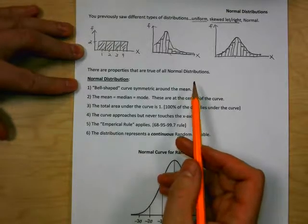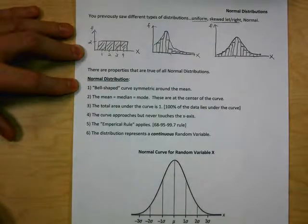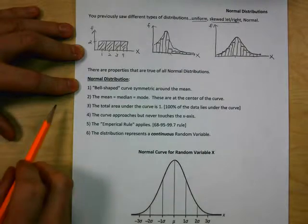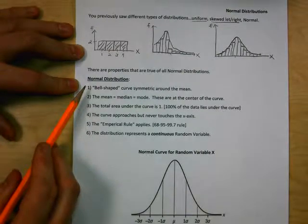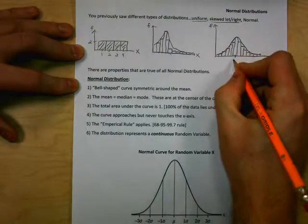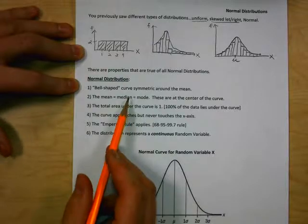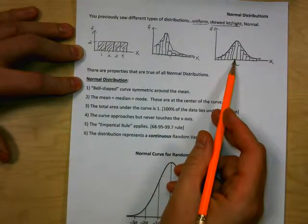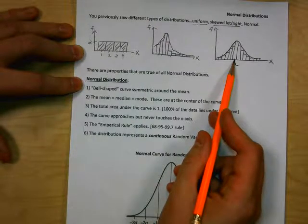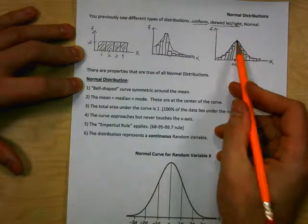Normal distributions occur a lot in the real world — whether they're the ages of a certain population, heights of men, heights of adult women, weights of men, weights of women, ages of things. Many things follow normal distributions. There are six properties. The first: a normal distribution is bell-shaped and symmetric around the mean — the population mean mu is right in the center. The second: mean, median, and mode are all equal — they're all in the center of the curve. The mode, the number that occurs most often, corresponds to the highest bar right in the center.